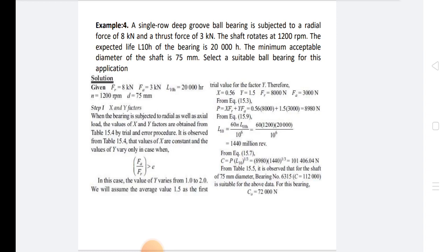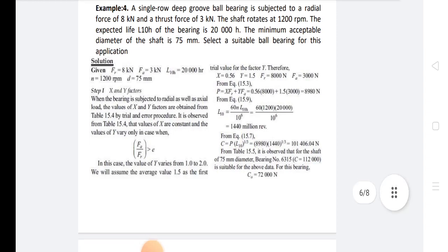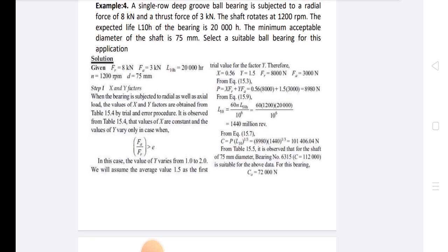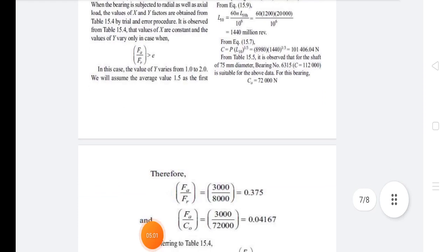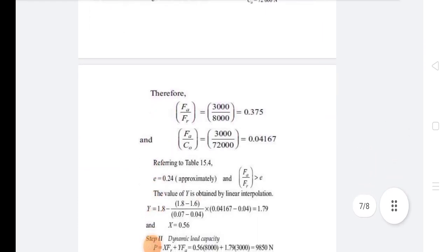From the equation, L10 = (60 × n × L10h) / 10^6 = (60 × 1200 × 20,000) / 10^6. Then C = P × (L10)^(1/3), giving C₀ = 70,000 N approximately.